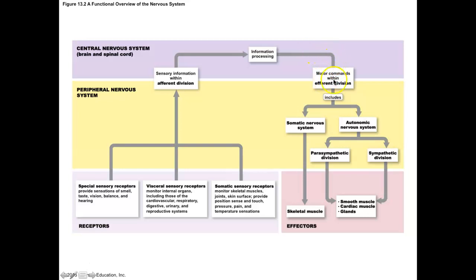The brain processes all that electrical activity coming in, and then has some output. We use the word motor for any output signals coming from the brain, and the word efferent means the same thing — efferent signals equal motor commands. Out comes some efferent information, and we can choose two pathways. If we want to move a skeletal muscle, that goes through the somatic nervous system — the voluntary pathway. For example, you feel an ant crawl on your arm: that somatic sensation travels up, and motor information goes through the somatic nervous system to your voluntary skeletal muscle so you can flick the ant off.